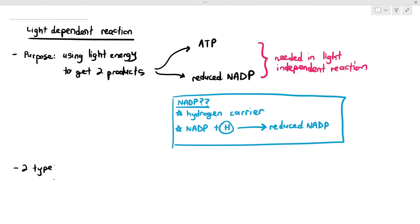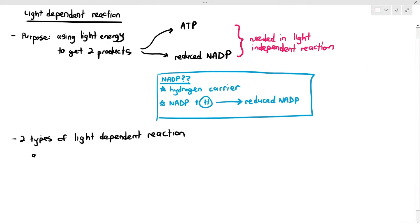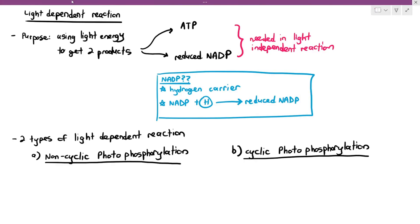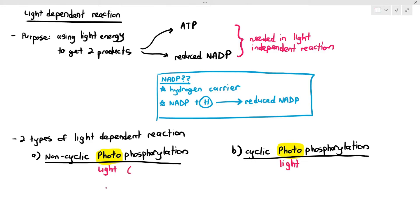There are two types of light-dependent reaction: non-cyclic photophosphorylation and cyclic photophosphorylation. When you see the word 'photo,' it just means it has something to do with light. Phosphorylation in this context means that ADP plus phosphate will then produce a molecule known as ATP. So photophosphorylation just basically means using light energy to convert ADP and phosphate into ATP.